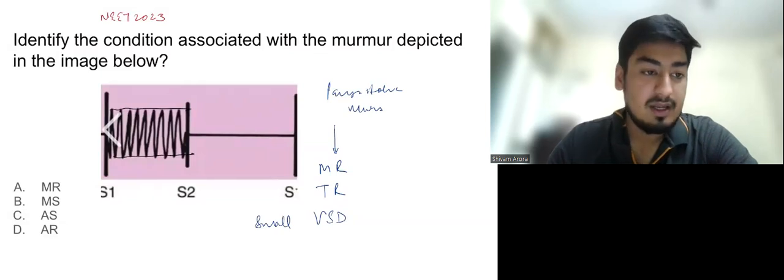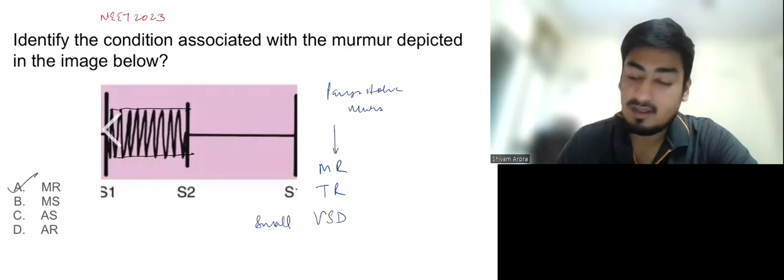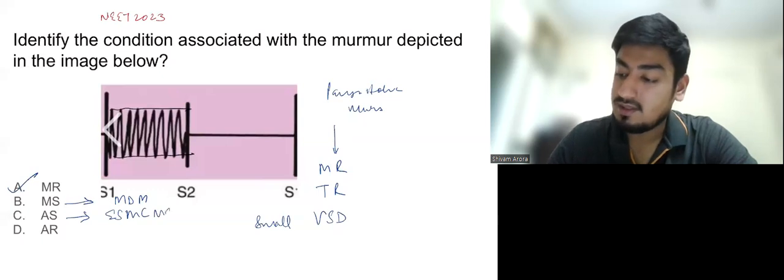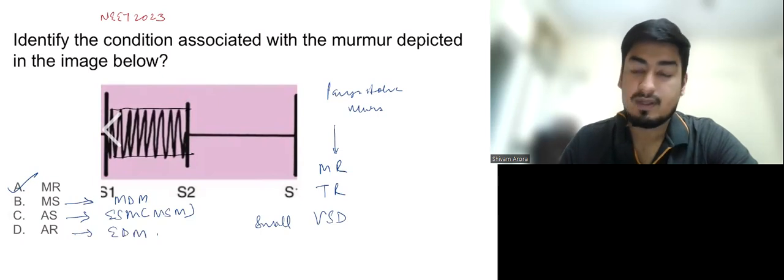We have MR as first option, which is the correct answer. In MS, we have mid-diastolic murmur. In AS, we have ejection systolic murmur which is also known as mid-systolic murmur. In AR, we have early diastolic murmur.